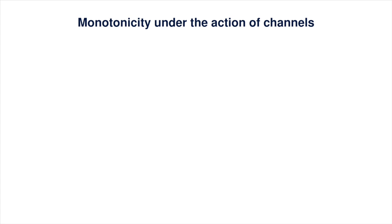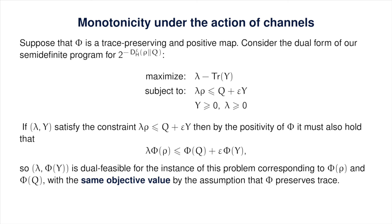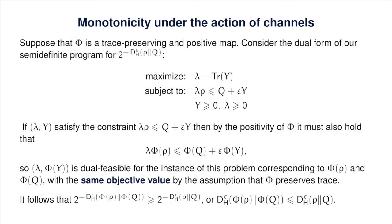The hypothesis testing relative entropy is monotonic under the action of channels, or more generally under the action of all trace-preserving and positive maps. An easy way to see that is to look at the dual problem. If we have any feasible solution to that problem, we immediately get a solution to the dual problem for the hypothesis testing relative entropy of phi of rho with respect to phi of q by applying phi to y, with lambda staying the same. Since phi preserves trace, we obtain the same objective value, meaning the optimal value can only get bigger for phi of rho and phi of q.